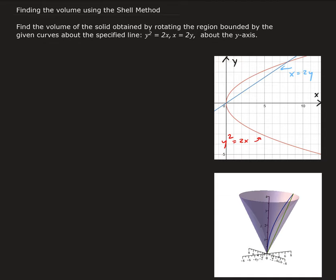We're going to use the shell method to find the volume. The shell method formula is: volume equals 2 pi times the integral from some lower bound to upper bound. Since we're going around the y-axis, the represented piece is going to be vertical — it has to be parallel to the axis of revolution. So the integral has to be in terms of x.